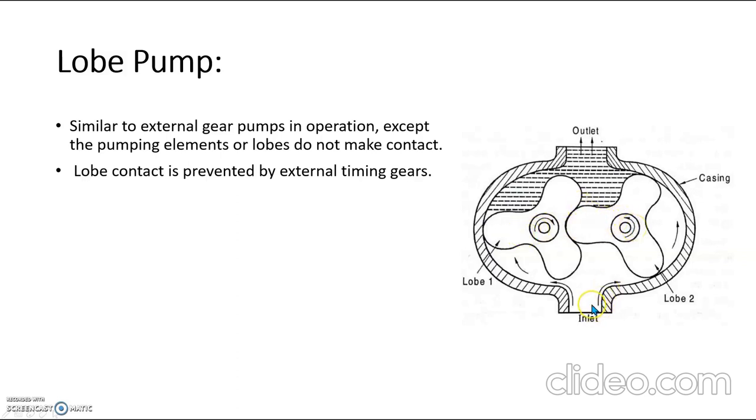As we can see in the external gear pump, there is inlet and outlet. The major difference in the lobe pump is there is no contact between these two. This contact is prevented by external timing gears, and the shaft of the lobe pump is driven independently.